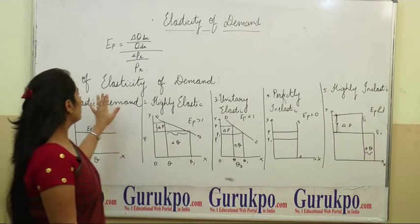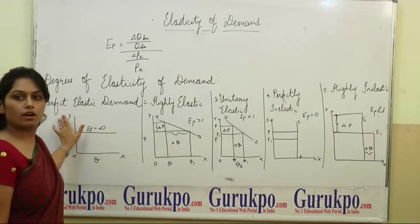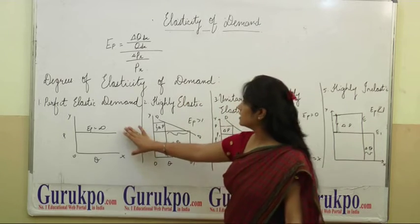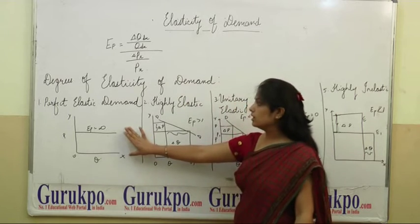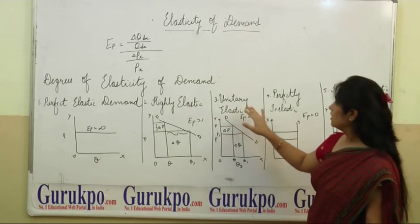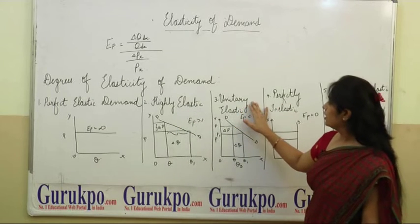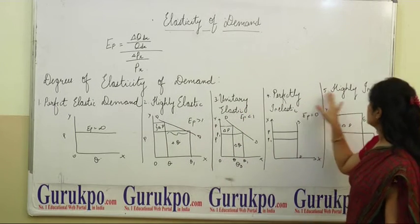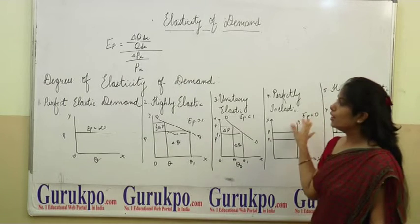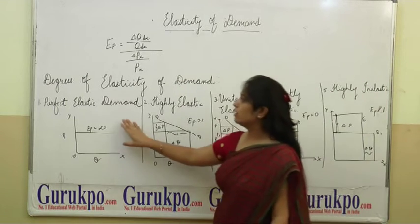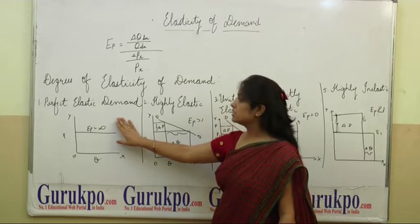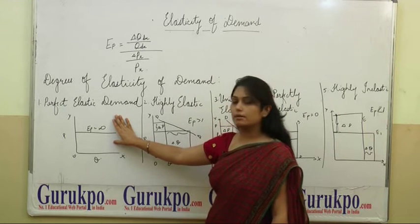Now, what are the degrees of price elasticity of demand? There are five degrees: the first is perfectly elastic, the second is highly elastic, the third is unitary elastic, the fourth is perfectly inelastic, and the fifth is highly inelastic. I am going to explain the first degree, that is perfectly elastic demand.